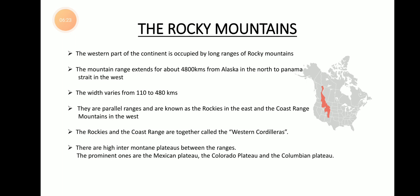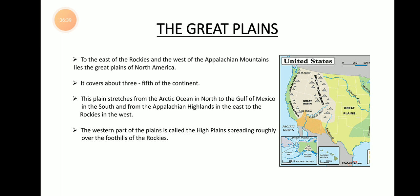That completes the first physiographical land system of North America — the Rocky Mountains. Now let's move on to the next system: the Great Plains.